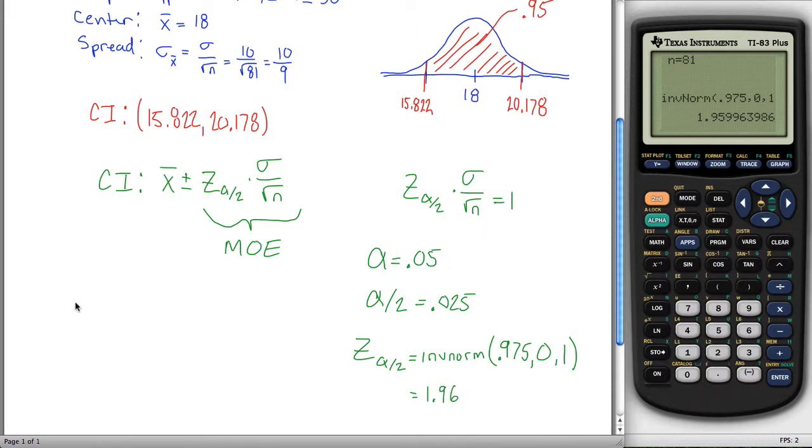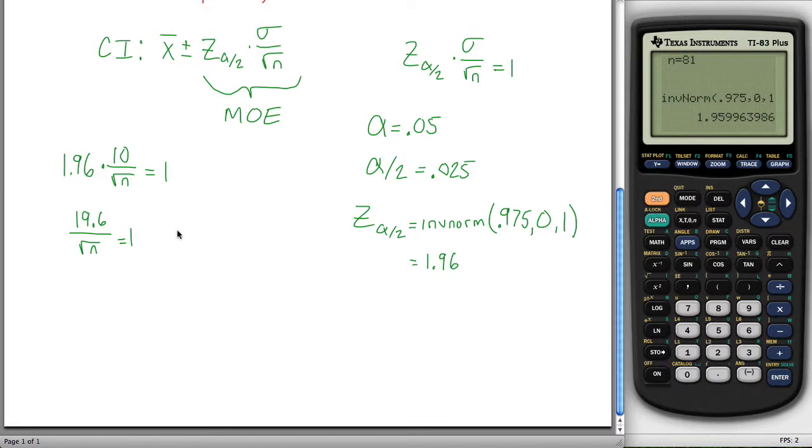And now I have all the information I need. I know that 1.96 times sigma, which it told me was 10, divided by the square root of n has to be equal to 1. In other words, 19.6 divided by the square root of n has to be equal to 1. In other words, solve this thing for n. I could multiply both sides of the equation by the square root of n, and get 19.6 is equal to the square root of n.